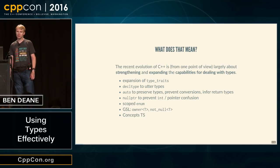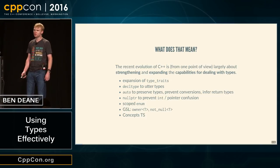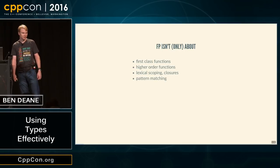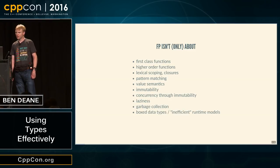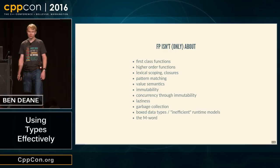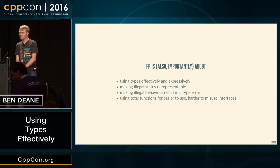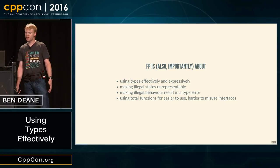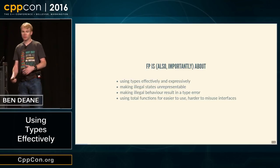One of the things you hear a lot at conferences lately is how C++ is getting things from functional languages. I wanted to reassure you this talk isn't about any of those things — not the M word. But functional languages like ML and Haskell do have lots of things they can teach us about types, in particular using them expressively and effectively.